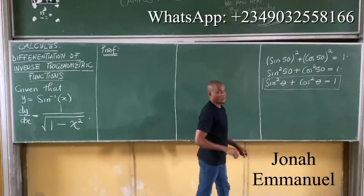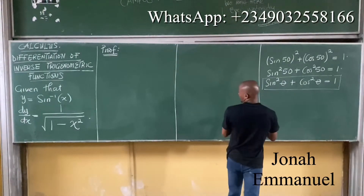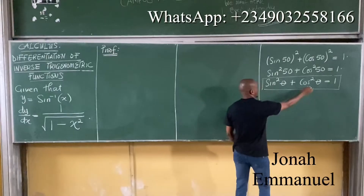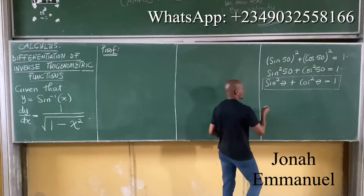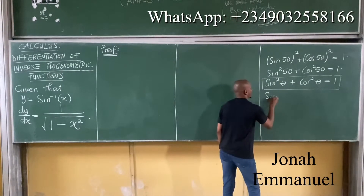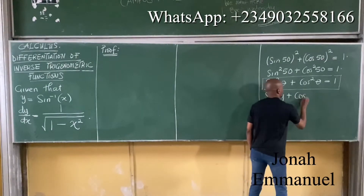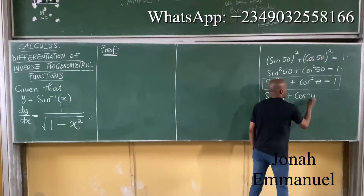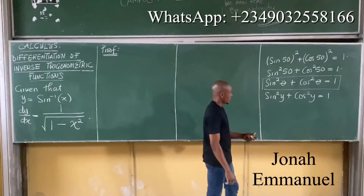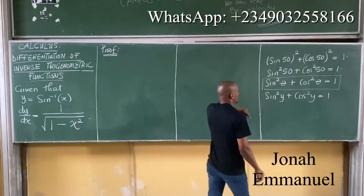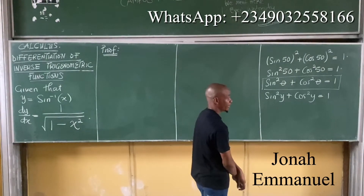That's the idea here. This is a popular relationship — you can remember this. So let's replace theta with either x or y. From this same concept, we can say that sine squared y plus cos squared y is equal to 1.